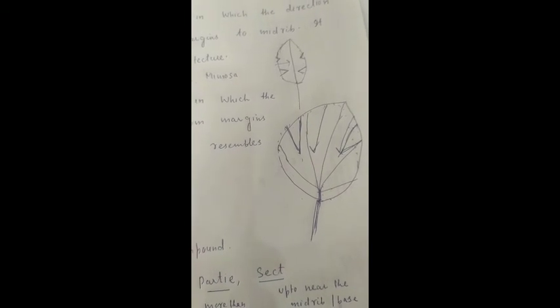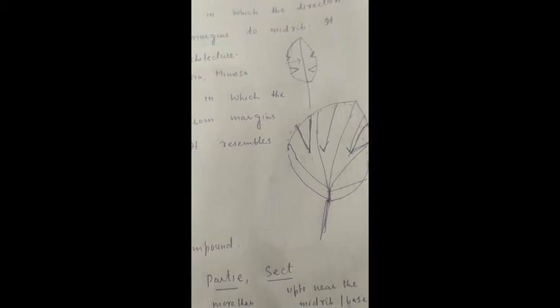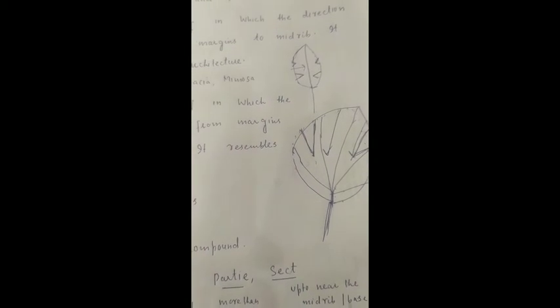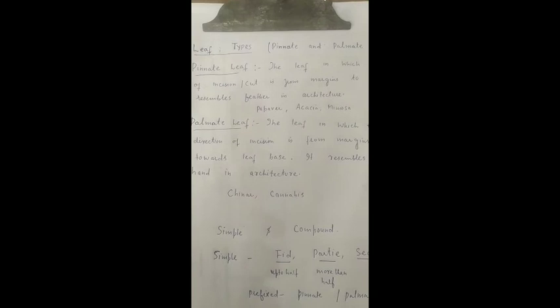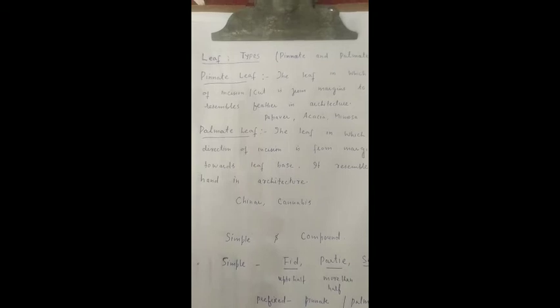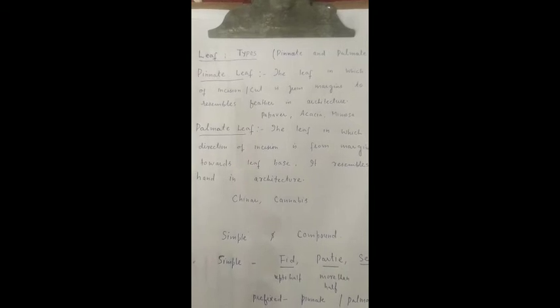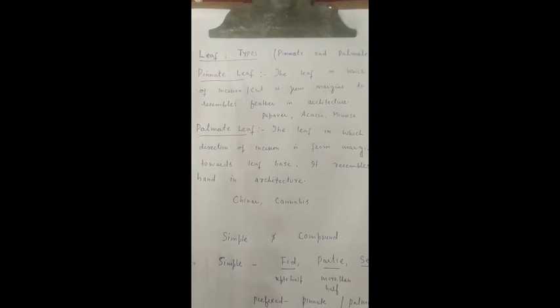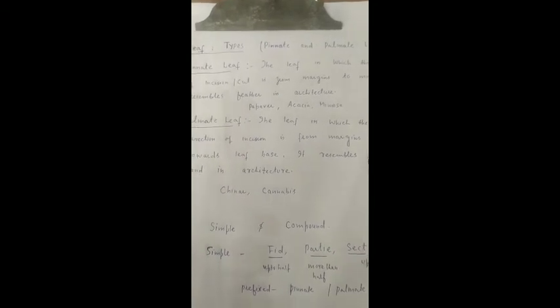Short میں یاد رکھنا: in pinnate leaf the direction of cut is from margins towards mid-rib, while in palmate leaf the direction of cut is from margins towards leaf base. Palmate leaf کا example ہے چنار کا leaf اور cannabis (بھنگ کا plant)۔